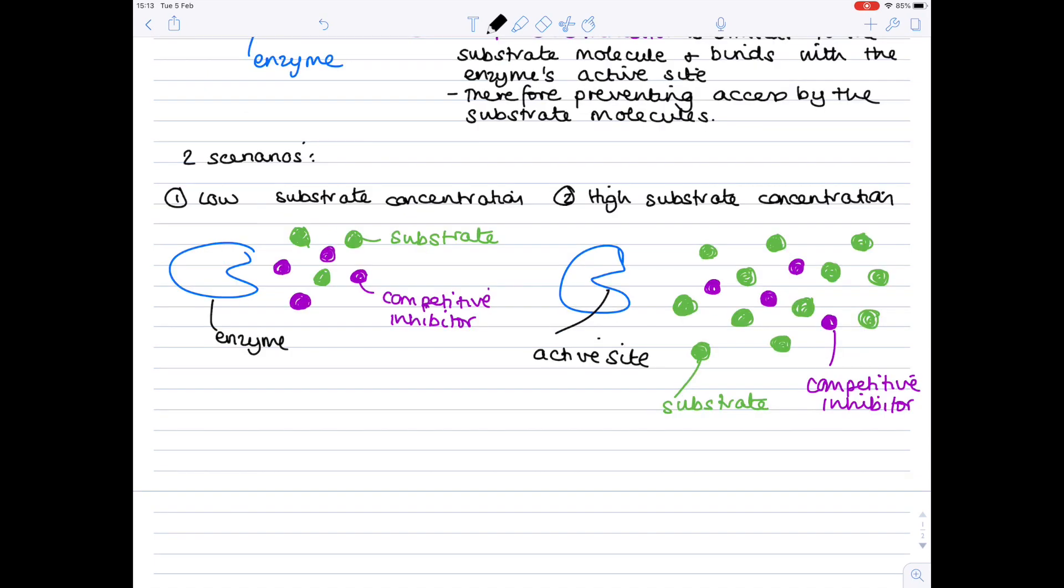So let's now look at two different scenarios. One where we have a low substrate concentration. So in our first example we only have three substrate molecules shown in green and we have four competitive inhibitor molecules. It's all really a matter of chance as to whether the substrate binds to the active site. You've got a similar number of substrate molecules and competitive inhibitor molecules. Sometimes the substrate will bind, sometimes the competitive inhibitor will bind.